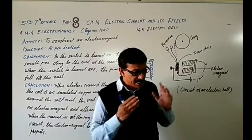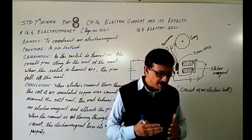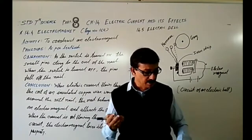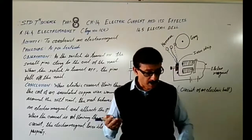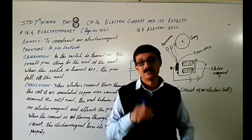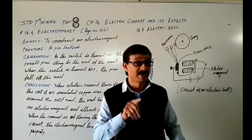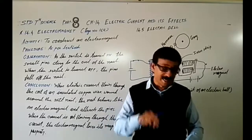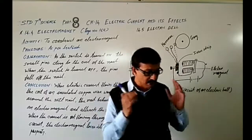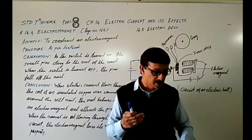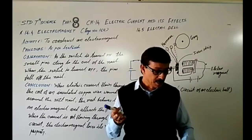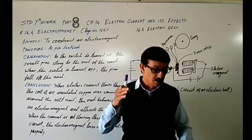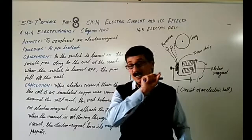The coil in the above activity behaves like a magnet when electric current flows through it. When the electric current is switched off, the coil generally loses its magnetism. Such coils are called electromagnets.